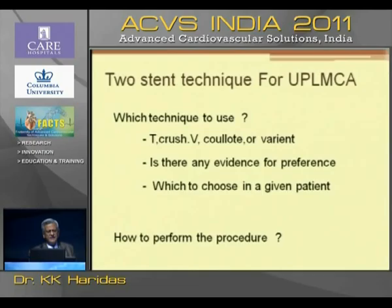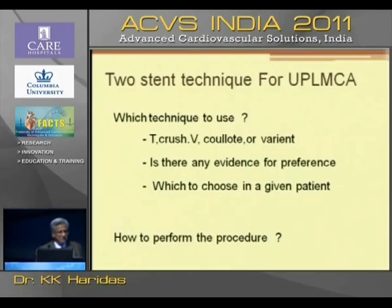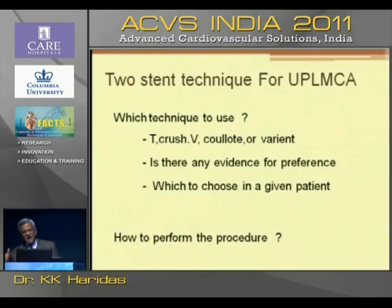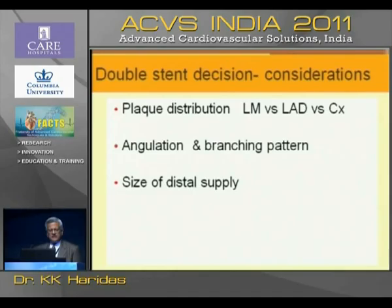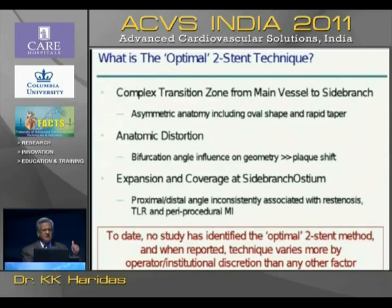When you go for an elective two-stent technique of unprotected left mains, the question arises which technique to use. You have many techniques — culotte, crush, T, V, SKS, and so on. Is there any evidence for preferring one over the other? Which to choose in a given patient and how to perform each of these procedures? Some considerations are plaque distribution, angulation and branching pattern, and the dominance of each of the branches.